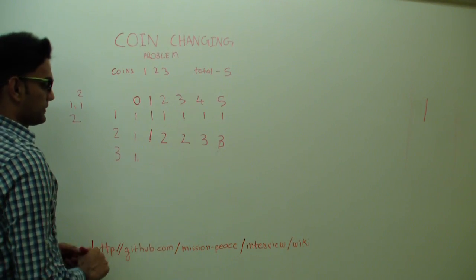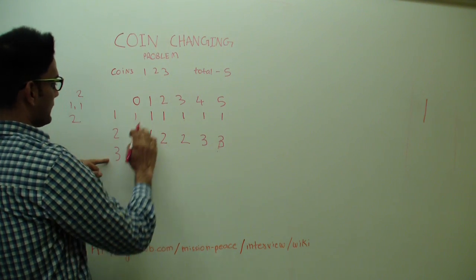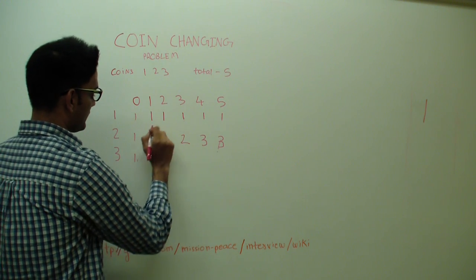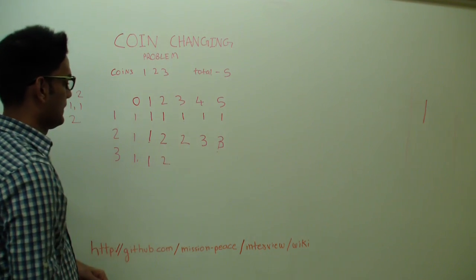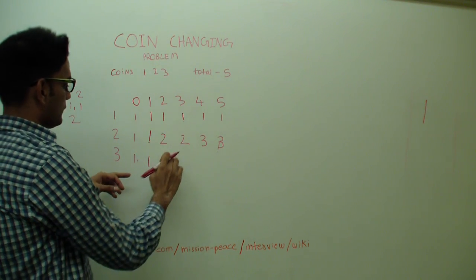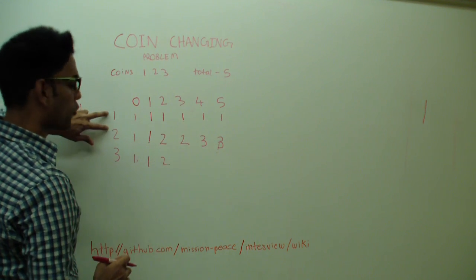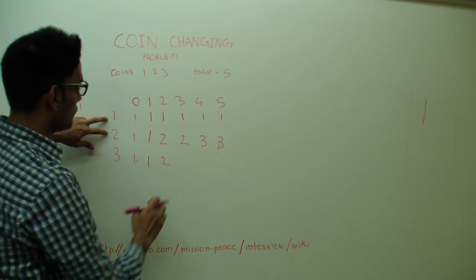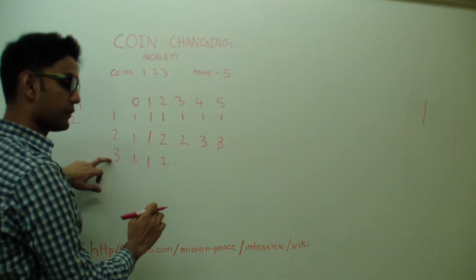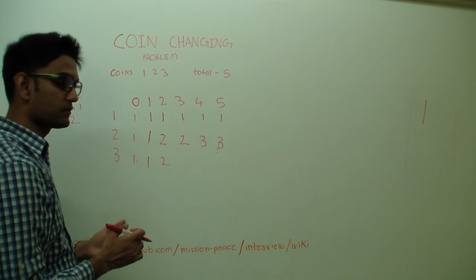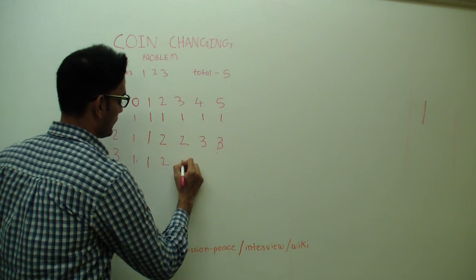Now let's introduce coin 3. Since 3 is greater than 1 and 2, for totals of 1 and 2 we just get the values from the top: 1 and 2. For total of 3, we already know coins 1 and 2 give us 2 ways, and now introducing 3 adds 1 additional way, so that's 3 total.